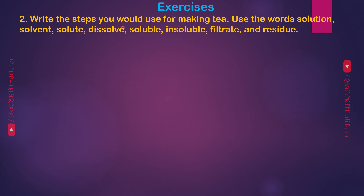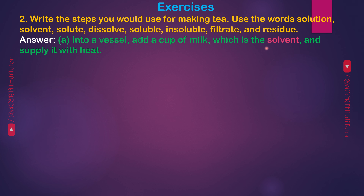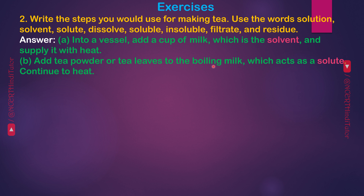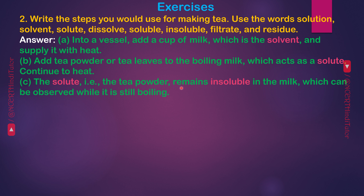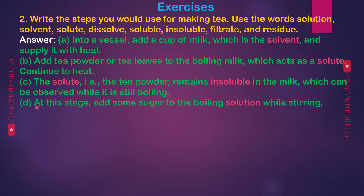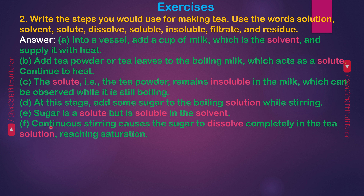Question 2: Write the steps you would use for making tea. Use the words solution, solvent, solute, dissolve, soluble, insoluble, filtrate and residue. Answer: A — Into a vessel, add a cup of milk, which is the solvent, and supply it with heat. B — Add tea powder or tea leaves to the boiling milk, which acts as a solute; continue to heat. C — The solute, i.e. the tea powder, remains insoluble in the milk. D — Add some sugar to the boiling solution while stirring. E — Sugar is a solute but is soluble in the solvent.